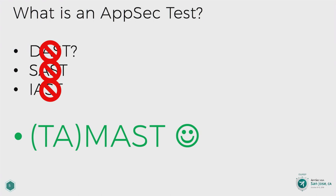TANAST stands for Tool Assisted Manual Application Security Testing — man against machine: me sat down working on the application, testing it, trying to find vulnerabilities. These are obviously great tools — the DAST, the SAST — but they're not going to find everything. They're not going to replace a human being thinking about how could this go wrong.